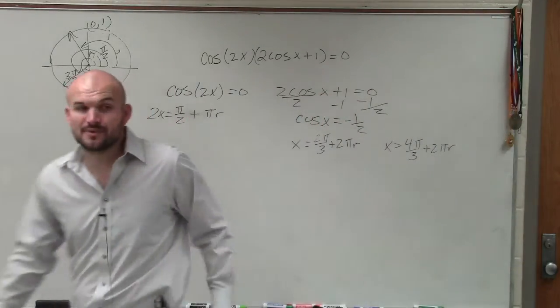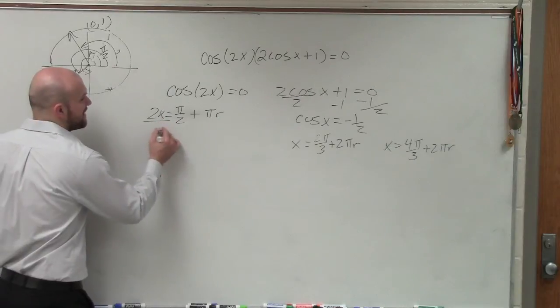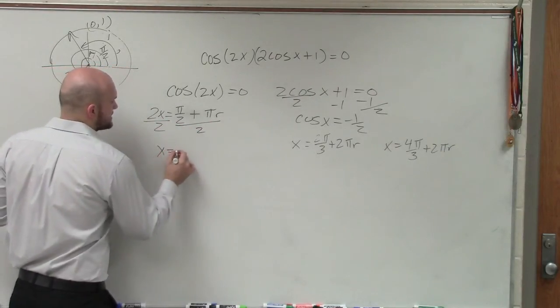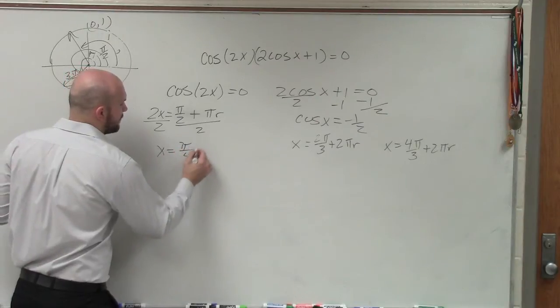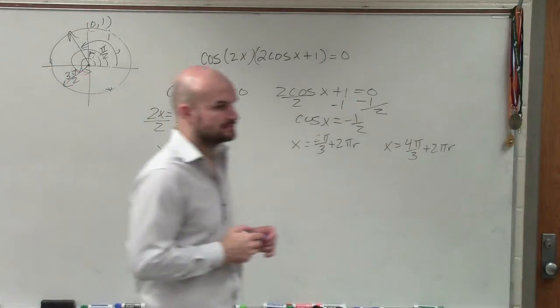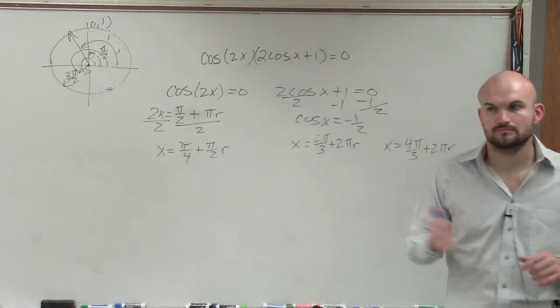And x equals 4 pi over 3 plus 2 pi n. Now, in this case, since we have a double angle, to find my solutions of x, I'm going to have to divide by 2. So therefore, x equals pi over 4 plus pi halves n. OK?